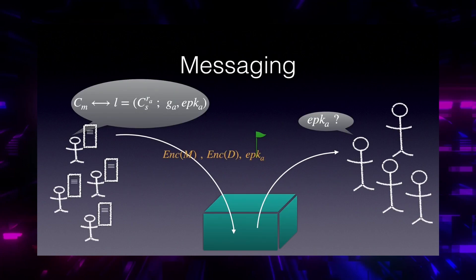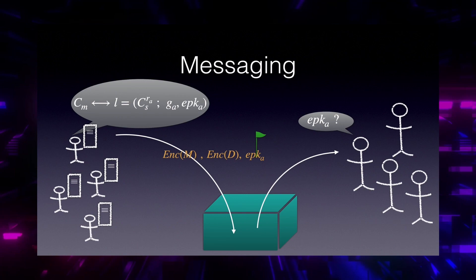Now it's the messaging phase. Each data owner knows that their commitment is assigned to an element of list L. That element has a randomized encryption public key. The data owner uses this public key to encrypt their message and the hiding factor D and sends it to a pool. To make extraction of the ciphertext from the pool efficient for the party, they also add a flag, which is just the randomized public key. The party knows their randomized public key, so they search for the flag, extract the ciphertext with that flag, and that's it.